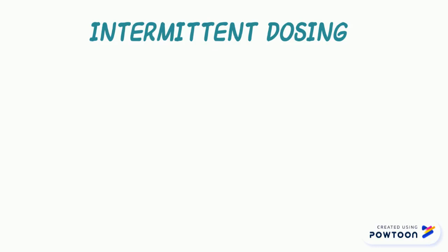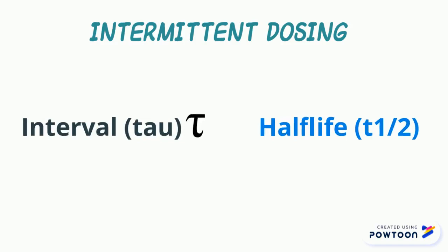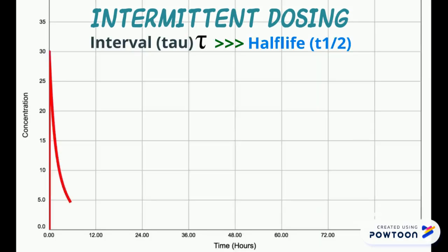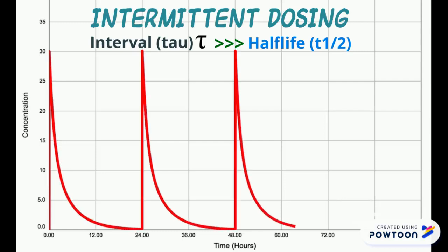Let's now move to intermittent dosing regimens, where the rate of administration depends on the amount of fluctuation in drug concentration during a dosing interval, determined by the relationship between the half-life and the dosing interval — tau. If a drug is administered at an interval much longer than its half-life (tau >> half-life), most of the drug will be eliminated during each dosing interval and the maintenance and loading doses will be almost identical.